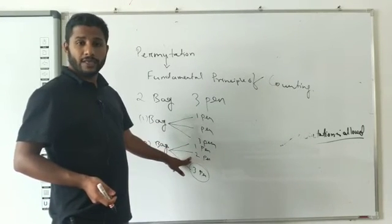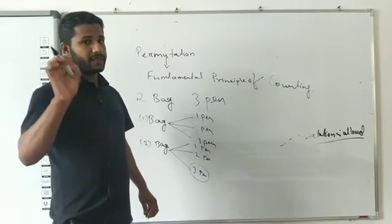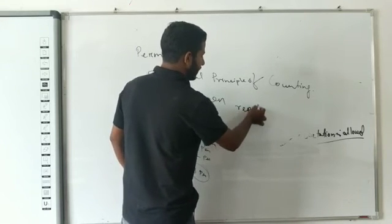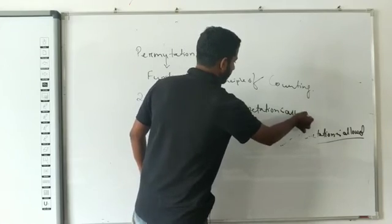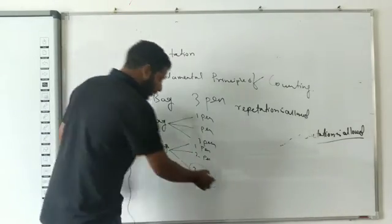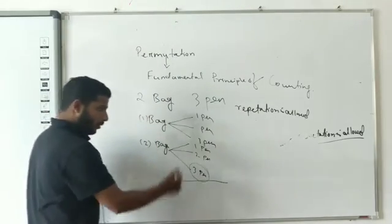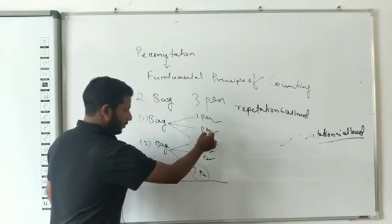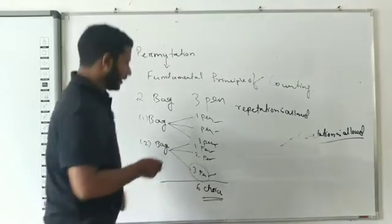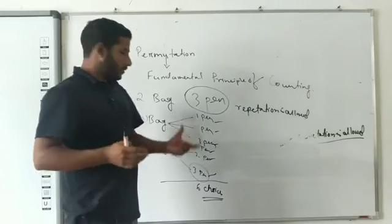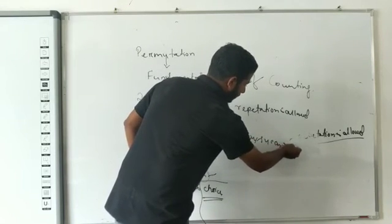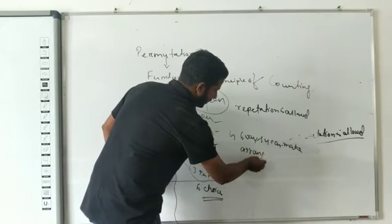If repetition is allowed, then after choosing one pen, you can choose the same pen again for the next position. With one choice per position and three choices available each time, the arrangements go: 1-2-3, 1-2-3, 1-2-3... In six ways you can make an arrangement.